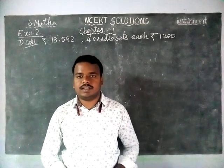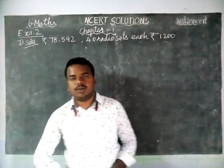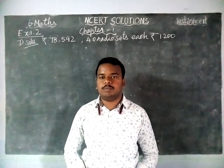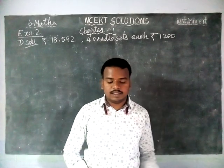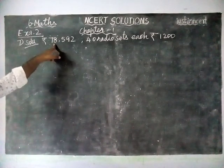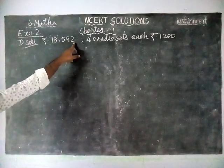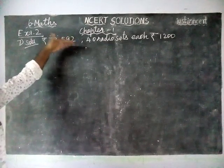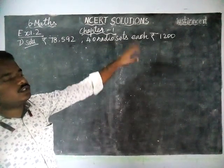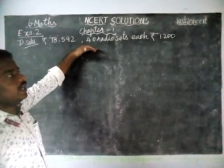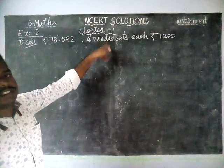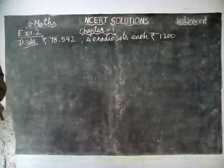Hi students, welcome to MCRT Solutions. Today we are going to see 600 Maths Chapter 1 Exercise 1.2, 7th Question. In this question, a merchant had Rs. 78,592 with her and she ordered 40 radio sets each costing Rs. 1,200. We are asked to find the total cost of 40 radio sets and the amount left with the merchant.